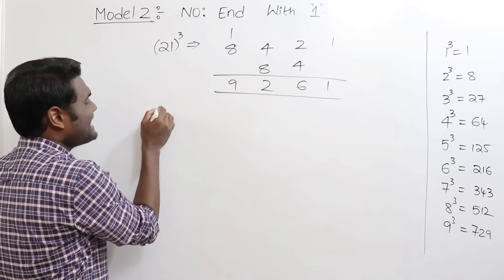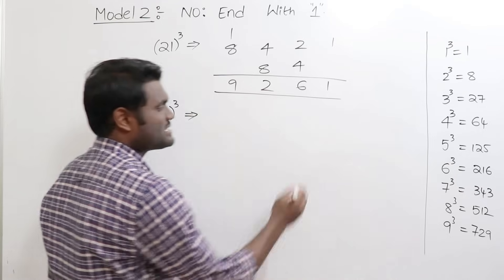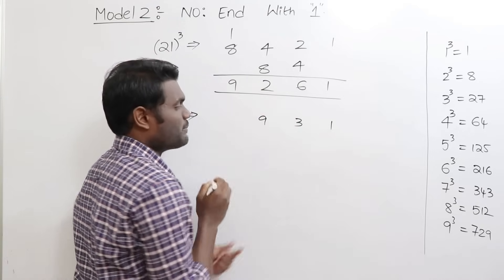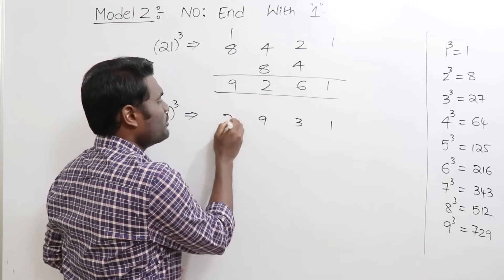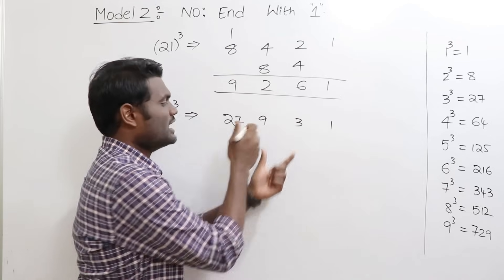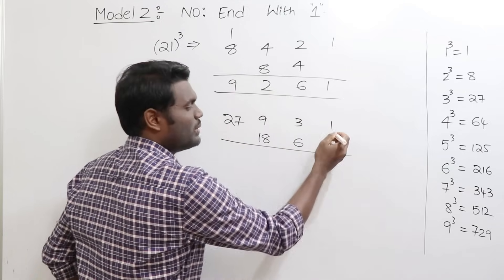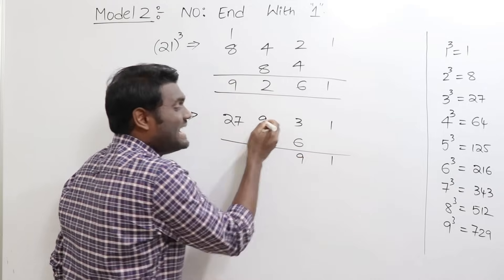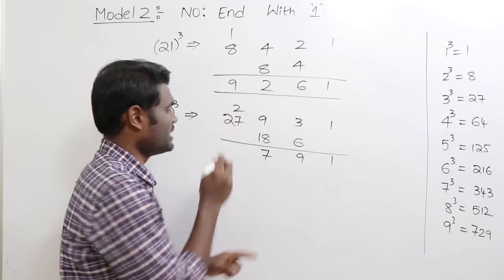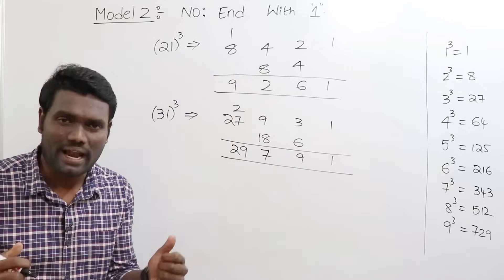Let's try 31 cubed. Starting from the right: digits 1 and 3. Square of 3 is 9; cube of 3 is 27. Leave first and last, double the middle: double 9 is 18, double 3 is 6. Adding right to left: 1; 3 plus 6 is 9; 18 plus 9 is 27 — write 7, carry 2; 27 plus 2 is 29. So 31 cubed equals 29791.